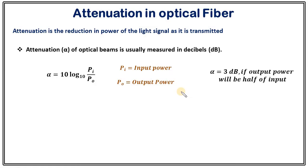For example, suppose that output power will be half of input after traveling through an optical core for one kilometer. In that case, P output equals half of P input. If you substitute it, you get alpha equals to 3. That means after traveling a distance of one kilometer over an optical fiber, the power reduction is half, and the attenuation factor is 3.